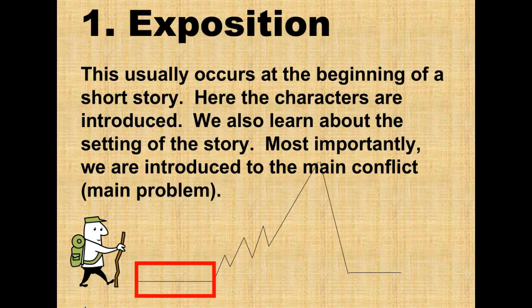The first part or the beginning, number one, the first point in our journey along the plot graph, is exposition. Exposition is the beginning of the story where the characters are introduced. You might get descriptions about them. We learn about the setting of the story and we're introduced to the conflict or the problem in the story.